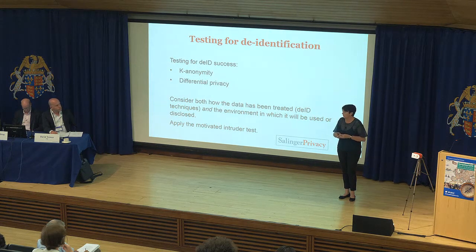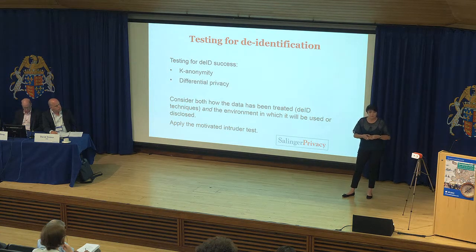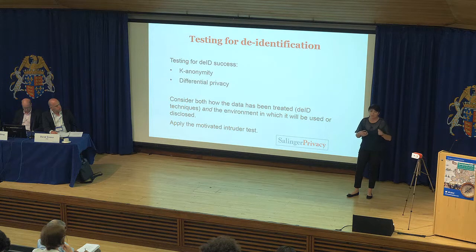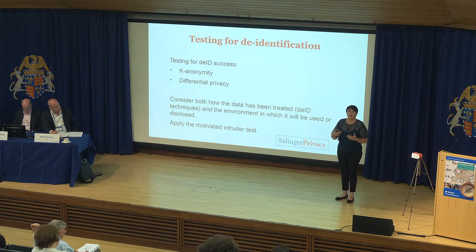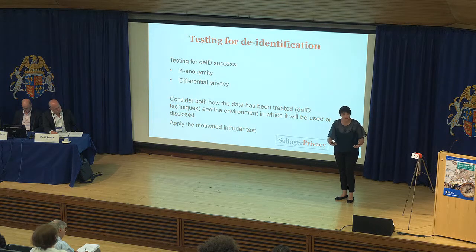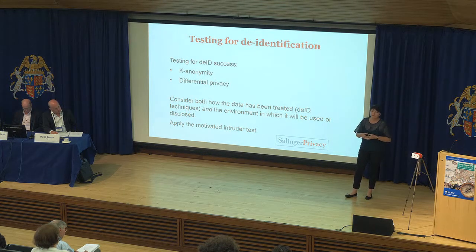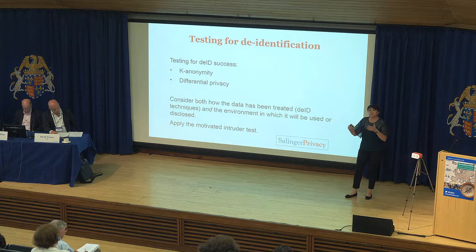You cannot differentiate any further between those three people. If you say K equals ten, then for any combination of variables, however you manipulate the data, there are at least ten people in that data set who share the same characteristics, and you cannot differentiate between those ten people any further. The higher you set the number of K, the lower the re-identification risk. However, to achieve a higher level of K, you may need to do a lot more to the data — strip more of it out, work with it more — so that the utility of that data starts to go down.